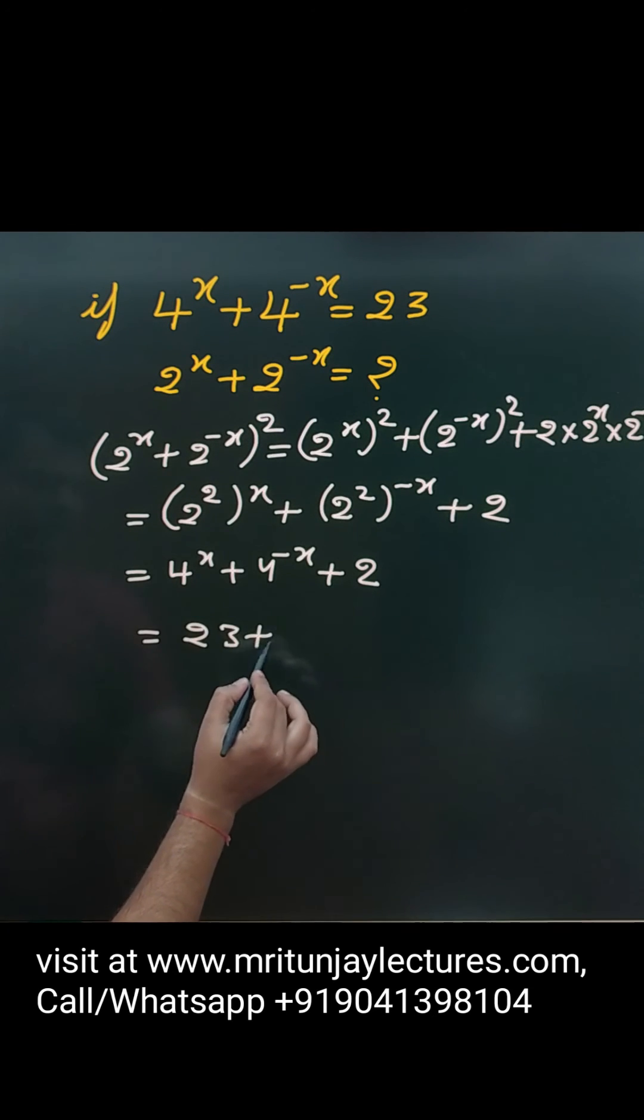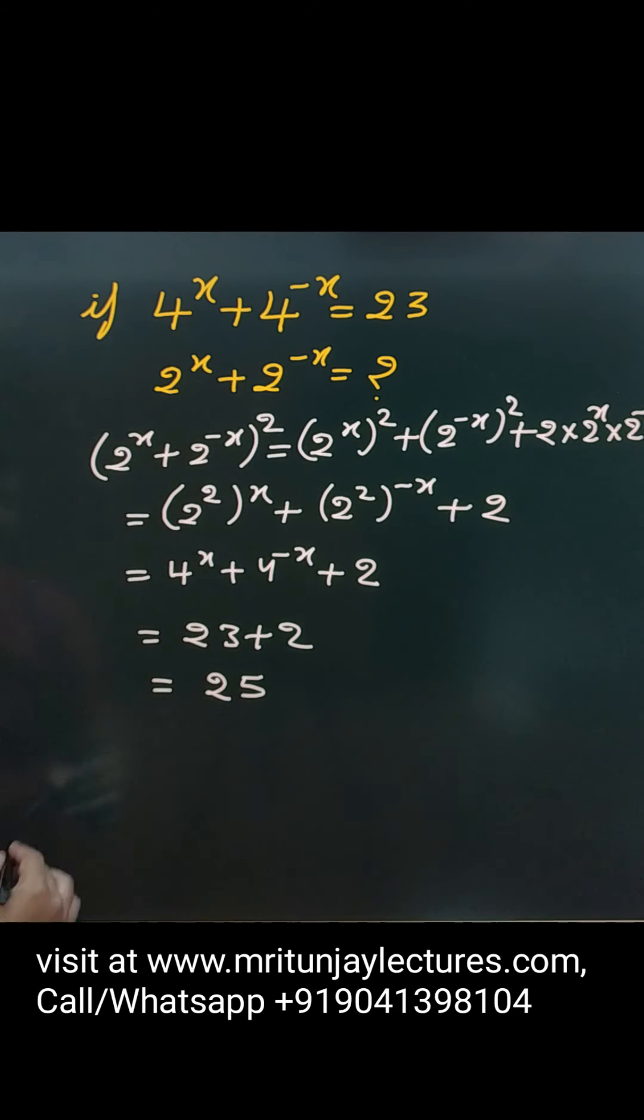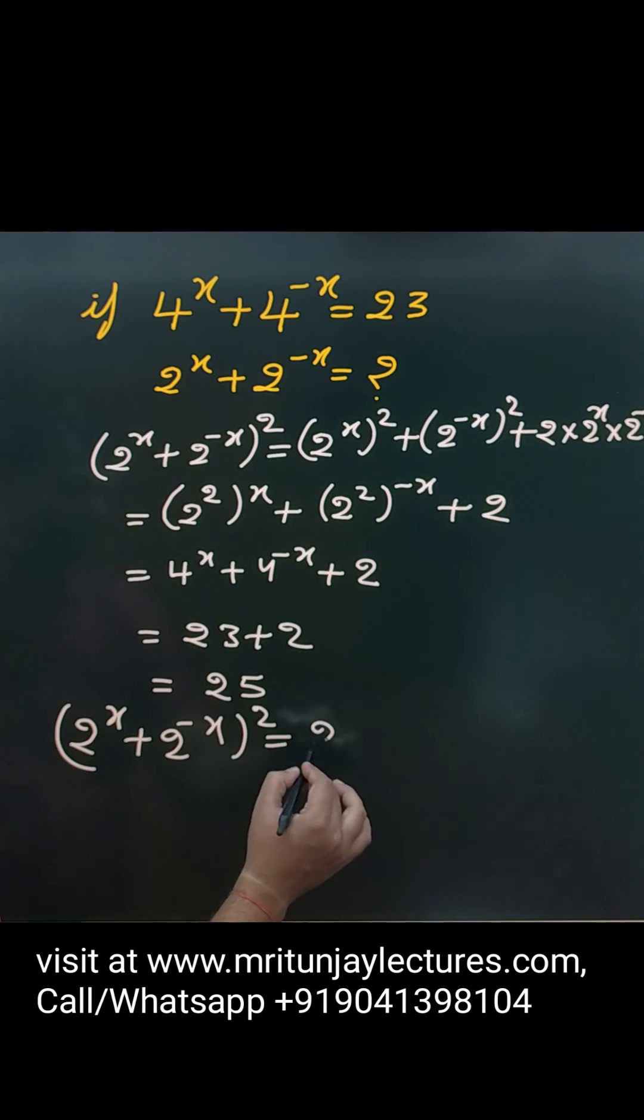So 23 plus 2, that is how much? 25. So you can say that 2 to power x plus 2 to power minus x to whole square, this will be equal to 25.